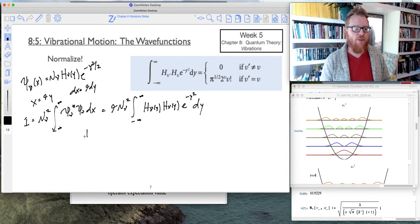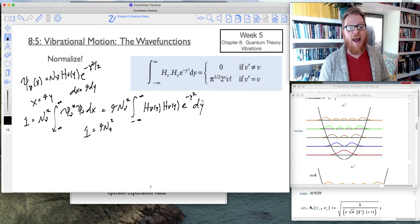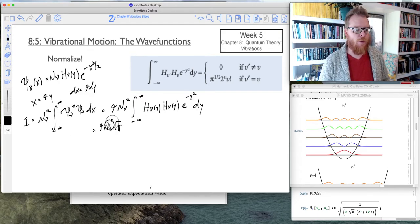And so now that means all of this is one equals, and I still have this alpha times normalization constant squared out in front, but now this whole integral is just going to become the square root of pi times... I'm going to make myself a little bit more space.